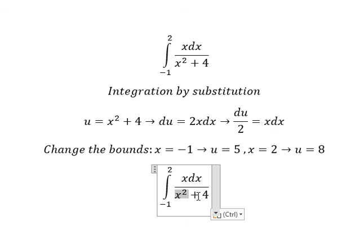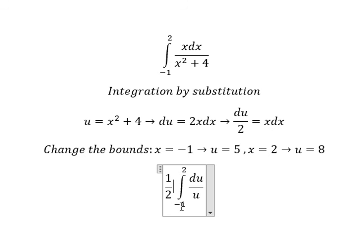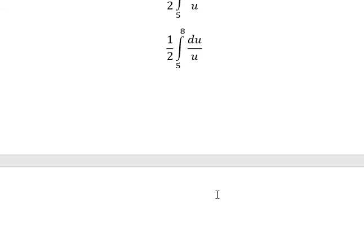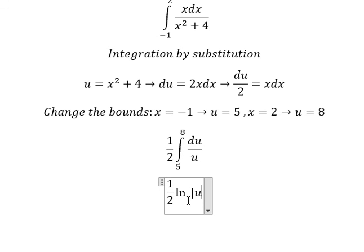So the expression is changed by u, and x dx is changed by du over 2. Negative number 1 becomes positive number 5, and number 2 becomes 8. The integration of this gives ln of the absolute value of u. We put the bounds from number 5 to number 8.